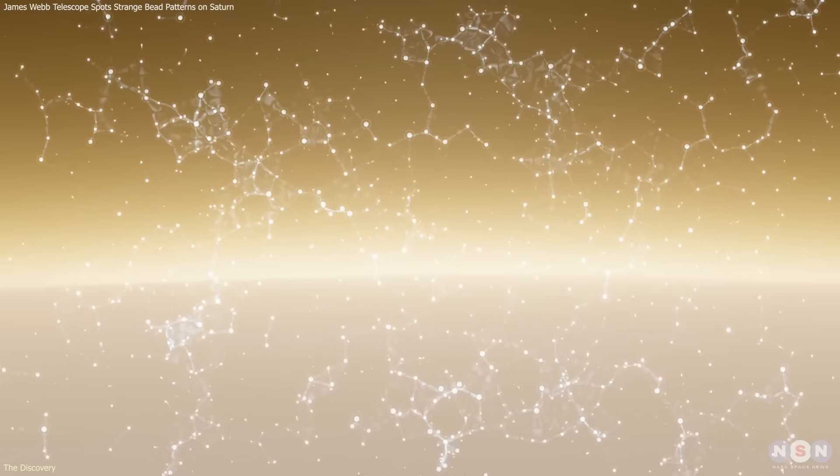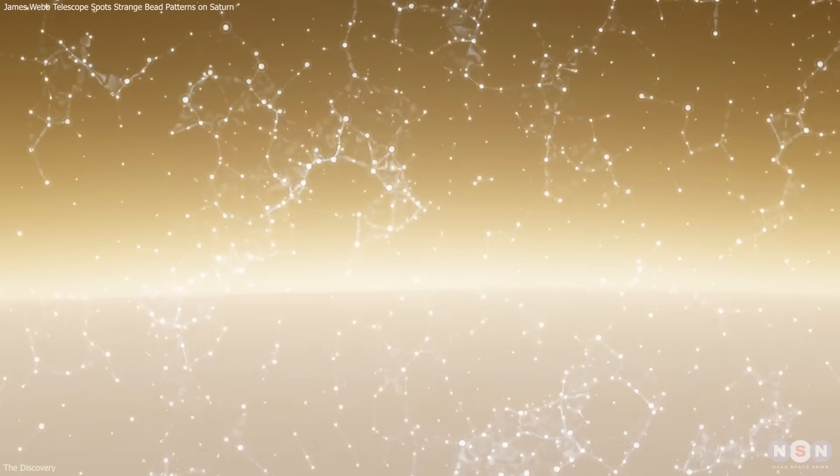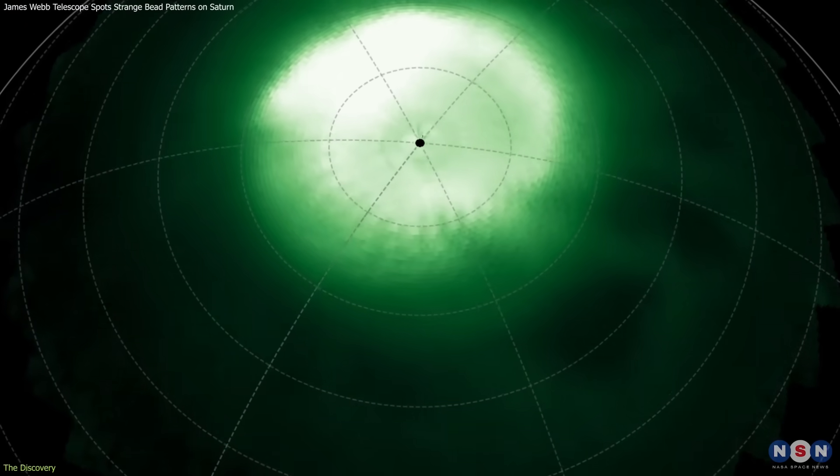The first target was the ionosphere, roughly 1,100 kilometers above its visible clouds, where hydrogen molecules form charged ions known as H3+. These ions glow faintly in the infrared, making them an ideal tracer of auroral activity.